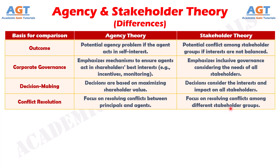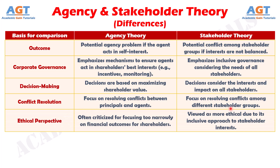Number ten: agency theory is sometimes seen as neglecting broader social responsibilities, whereas stakeholder theory is considered more ethically inclusive.